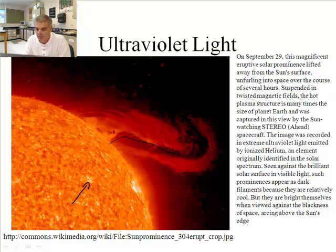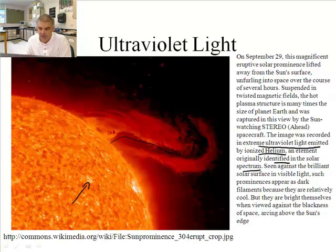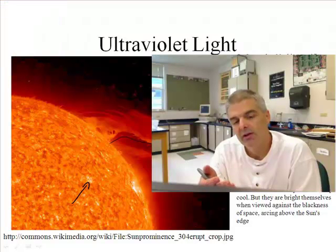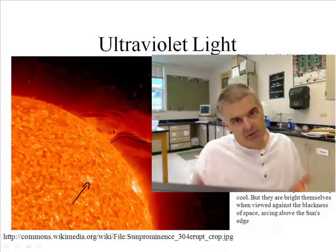In fact, you can read this little blurb about this particular picture, sort of a famous picture of the sun. But the image was recorded in extreme ultraviolet light emitted by ionized helium, an element originally identified in the solar spectrum. So it's a very cool kind of picture, but you can take pictures in the different colors of light, or the different types of light, I should say.